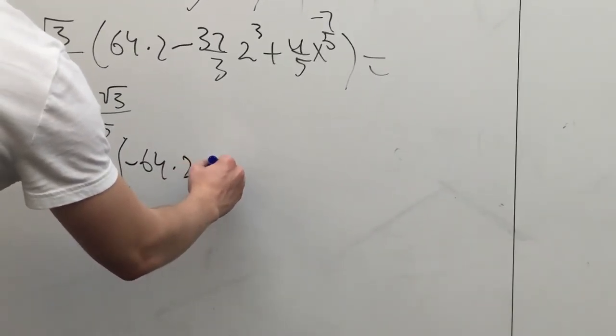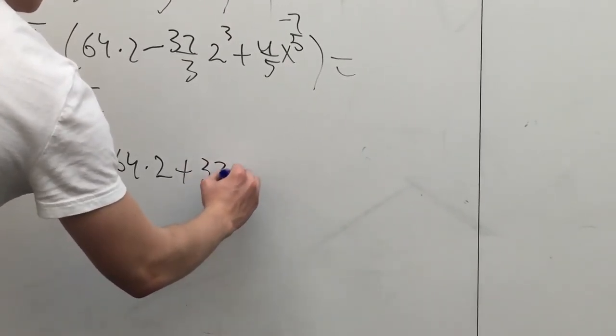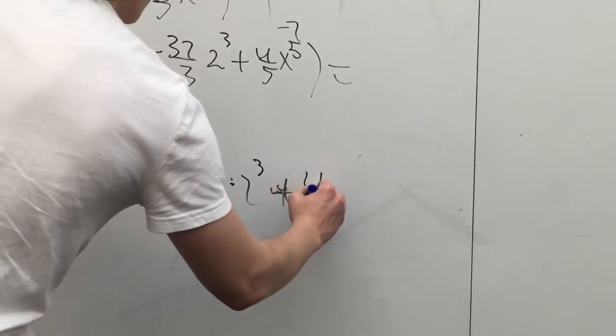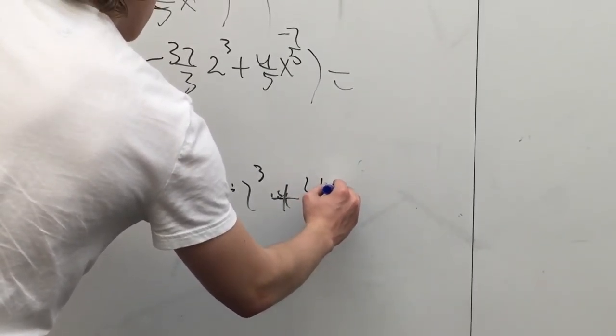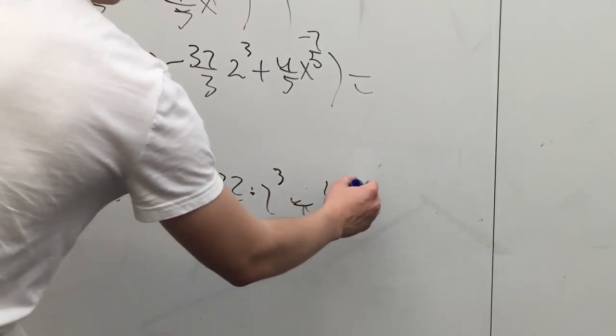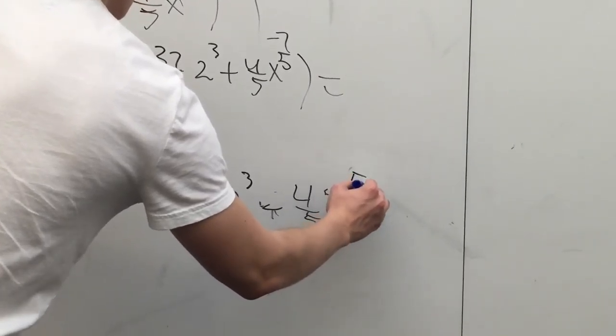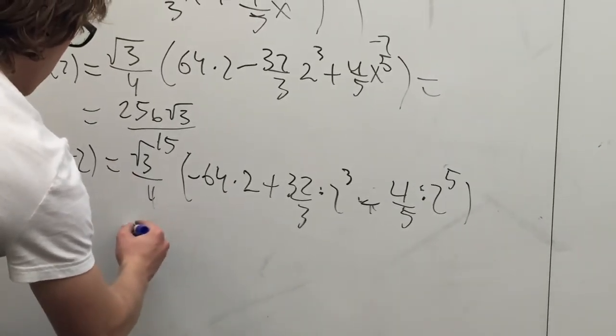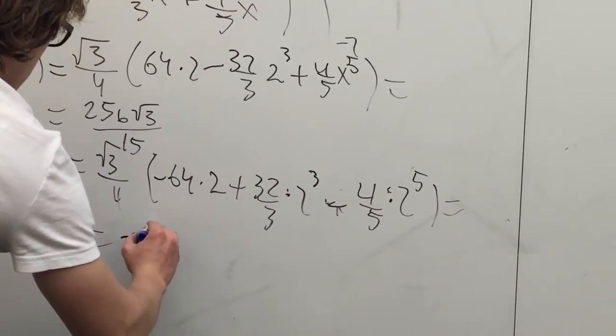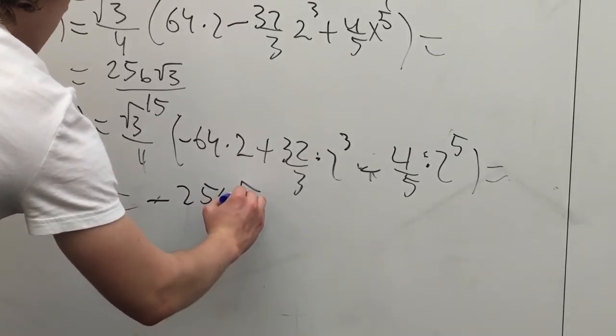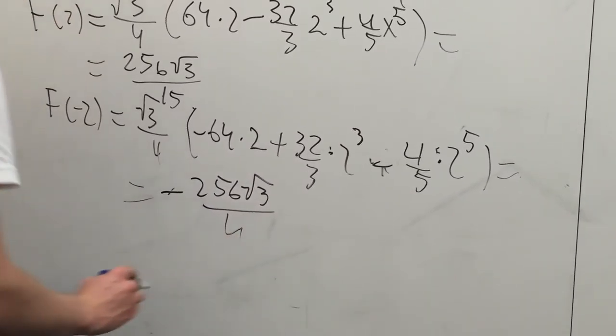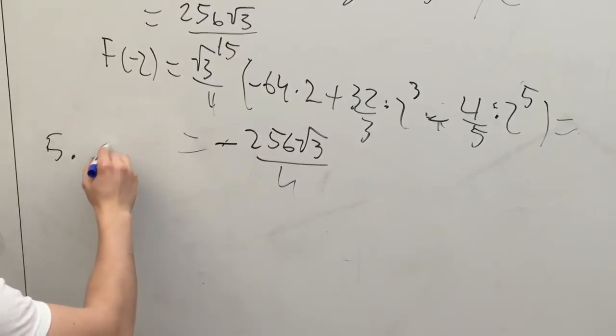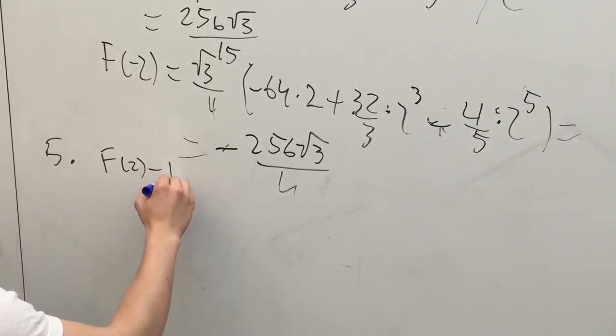F of negative 2 equals square root of 3 over 4 times (negative 64 times 2 plus 32 over 3 times 2 cubed minus 4 over 5 times 2 to the fifth), which is the opposite of this number, so it equals negative 256 square root of 3 over 15.